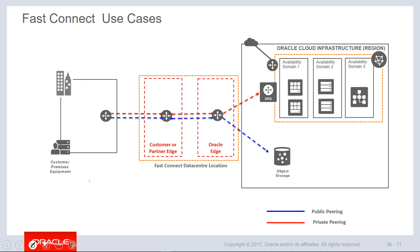FastConnect supports both public and private peering. Private peering utilizes the private IP space to communicate between resources in the on-premises data center and OCI, and all private peering traffic uses the dynamic routing gateway to connect into the VCN. FastConnect also supports public peering, as illustrated by the blue line. Public peering allows customers to connect to region-based resources that exist outside of the VCN — things like object storage, API endpoints, or public IP addresses assigned to compute resources. The path traverses from the customer's on-premises data center to the Oracle Edge location and routes directly to the public resource within the region, without needing to go through the DRG, but all traffic still traverses that private FastConnect circuit without ever going across the public internet.